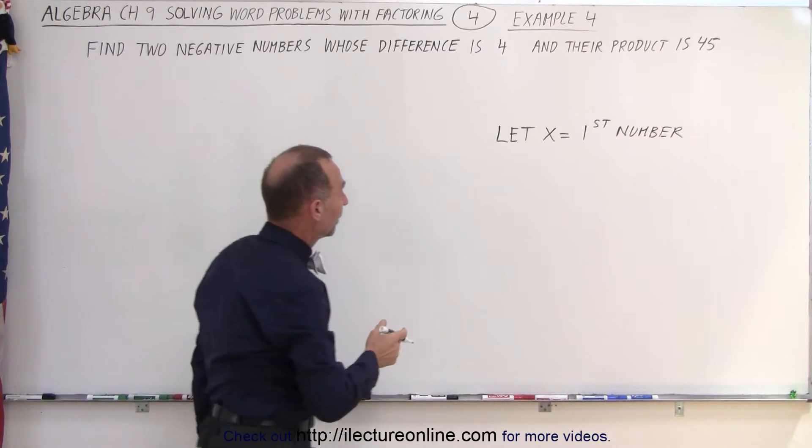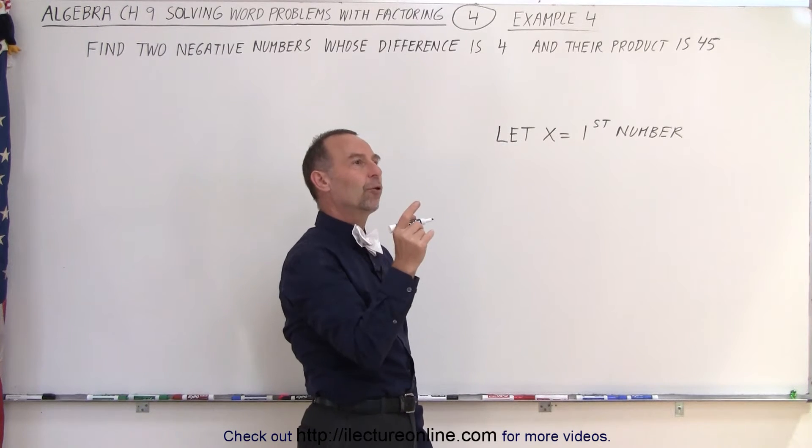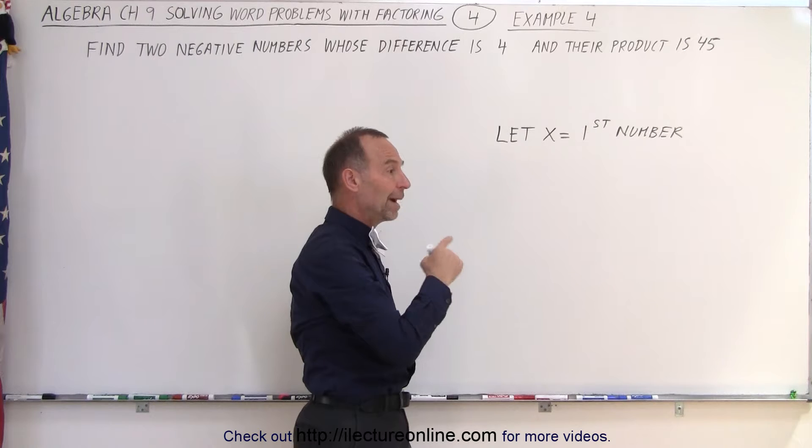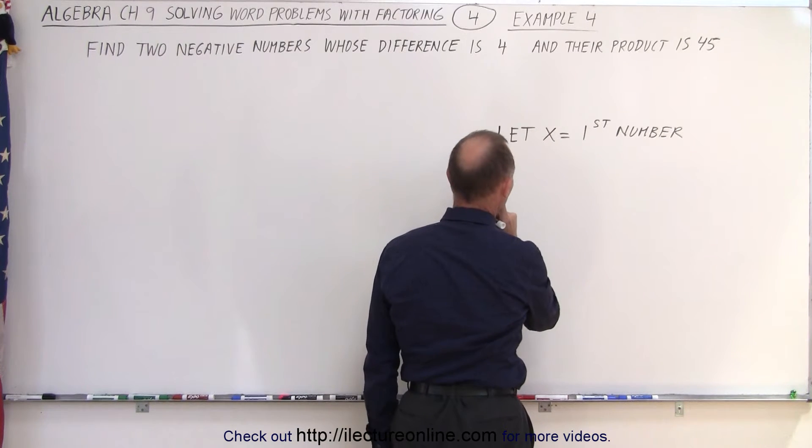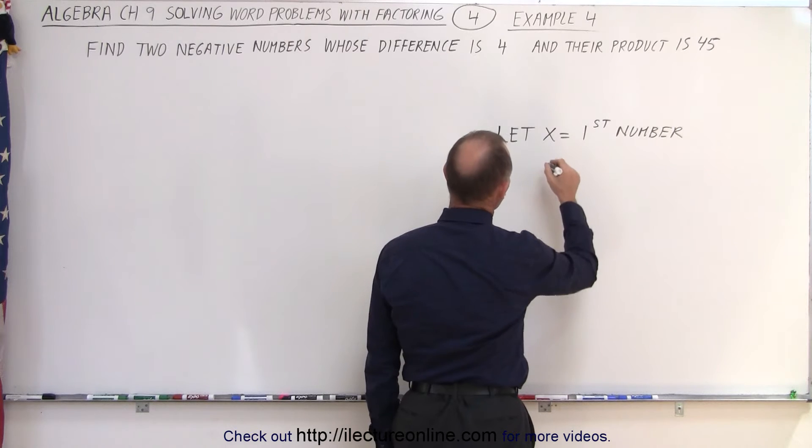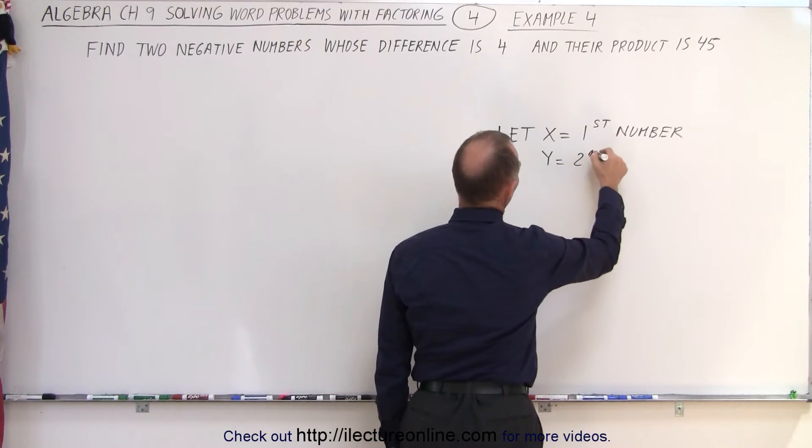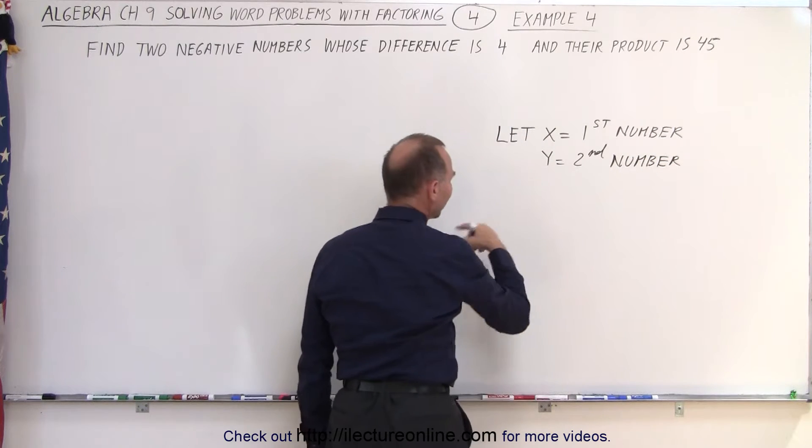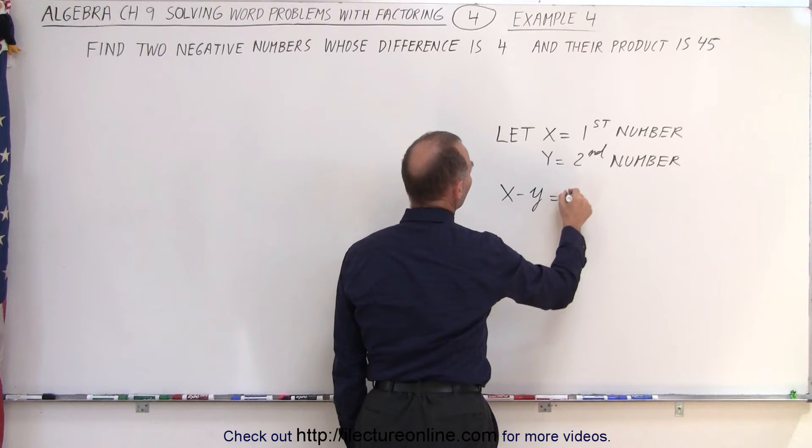If the difference is 4, then one number minus the other number equals 4. So how do we define the next number? I'm going to let y equals the second number. So now the difference between them, I can now say that x minus y is equal to 4.